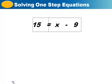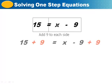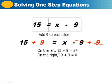So what we want to do to get x by itself is we want to add 9 to both sides. Remember, we're going to add 9 to both sides, so this becomes 15 plus 9 and x minus 9 plus 9. On our left side of the equation, 15 plus 9 equals 24. But on our right side of the equation, we have negative 9 plus 9, so that's equal to 0. So our answer is 24 equals x.